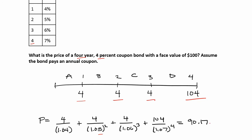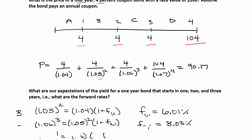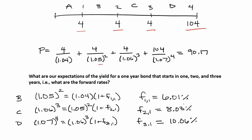Once we discount all of these cash flows and add them all up, we find that the price of the bond is $90.17. The next part of this example is to find the forward rates for each period: starting one year in the future, two years in the future, and three years in the future.